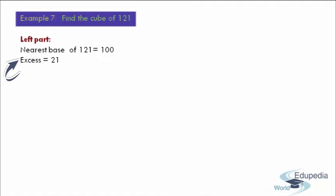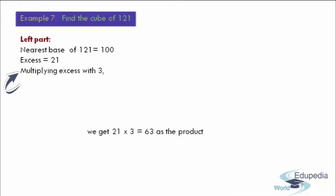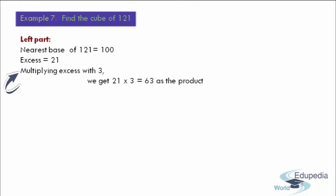After finding the excess, moving to step number 3. Now what we have to do here is we have to multiply the excess with 3. So therefore by multiplying 21 into 3, we get 63 as the product.